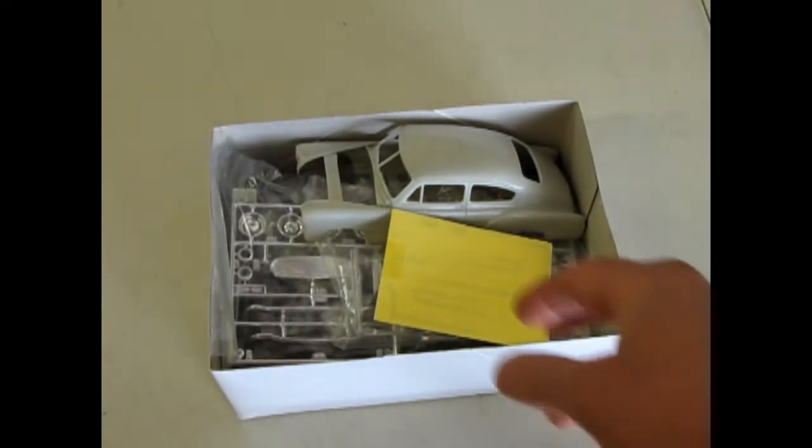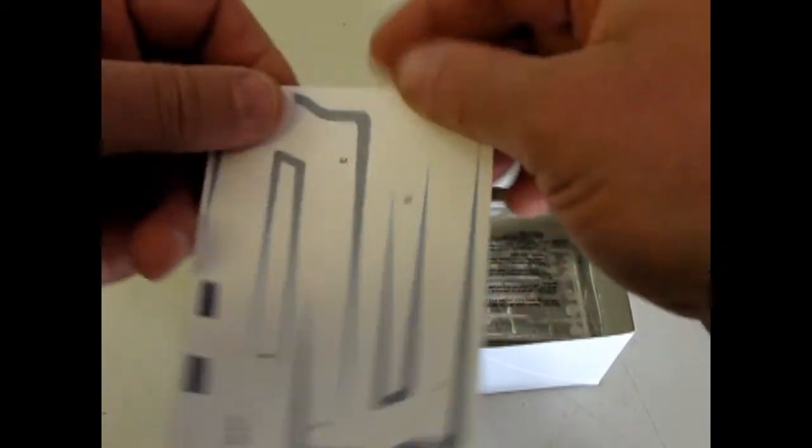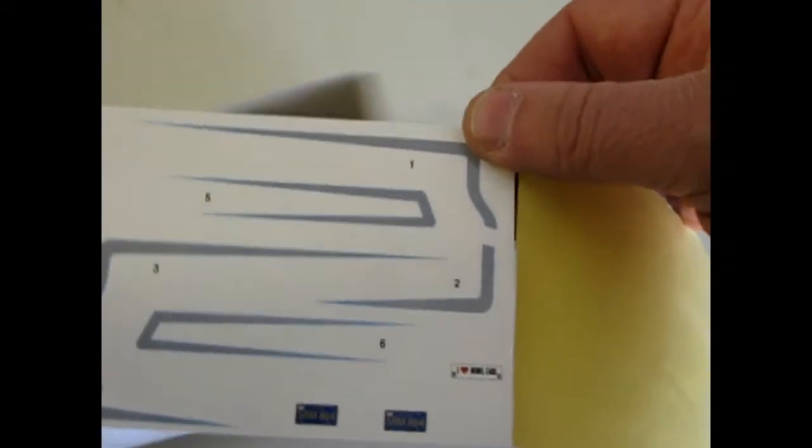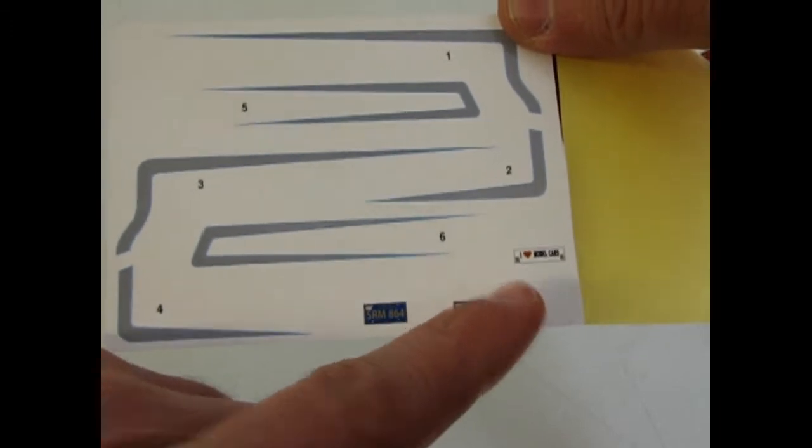So now let's take a look at the decals and see what colors they're in. Here you get this nice silver with the blue pinstripe and the little decal that says I love model cars. It's a bumper sticker.